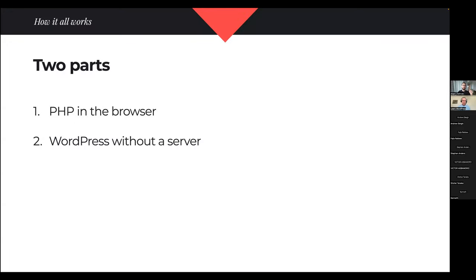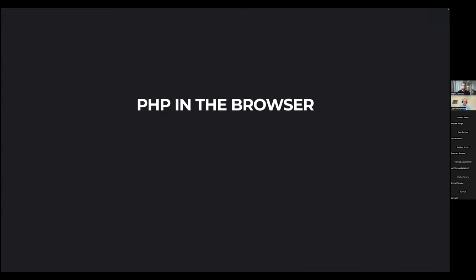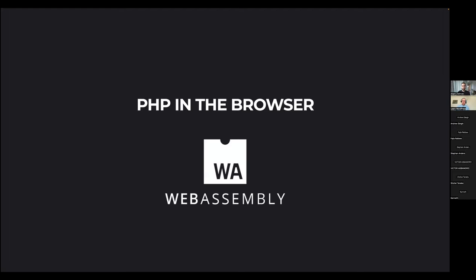So let's take a look at how all of that seemingly magic works internally. There are two parts to WordPress Playground: PHP working in a browser, and WordPress working without a server. Let's take a look at PHP in the browser — this is possible thanks to a new technology called WebAssembly.